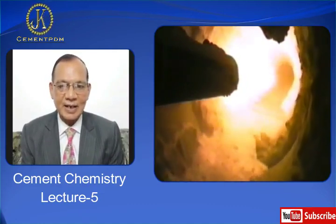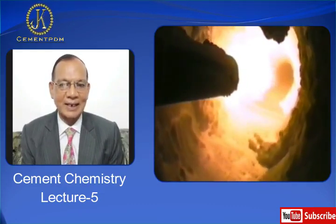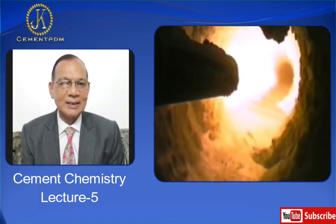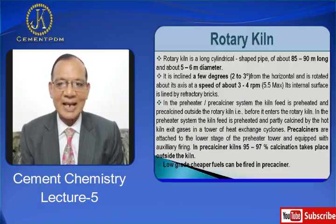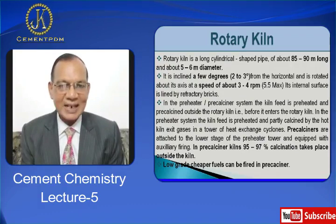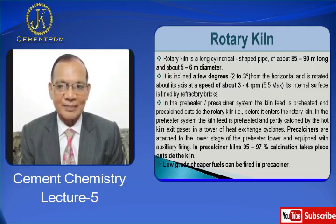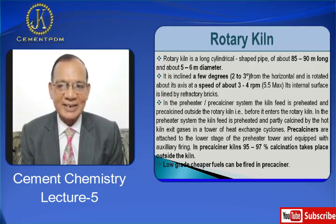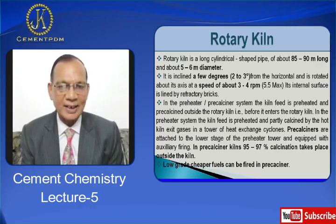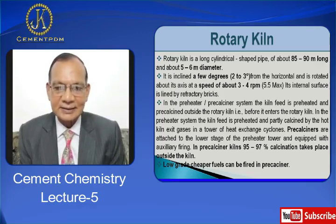Its internal surface is lined by refractory bricks. In the pre-heater pre-calciner system, the kiln feed is preheated and pre-calcined outside the rotary kiln, that is before it enters the rotary kiln. In the pre-heater system, the kiln feed is preheated and partly calcined by the hot kiln exit gases in a tower of heat exchange cyclones.